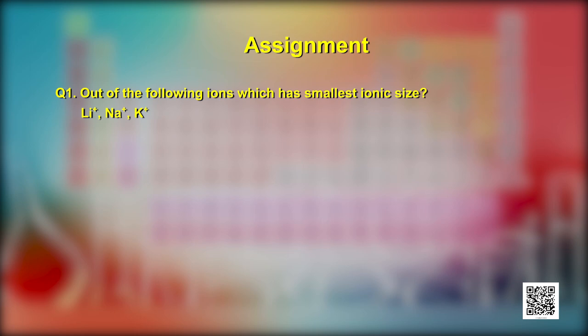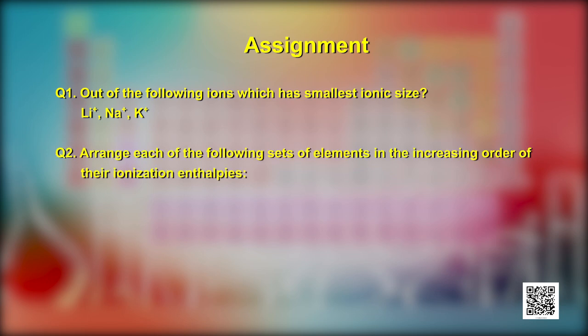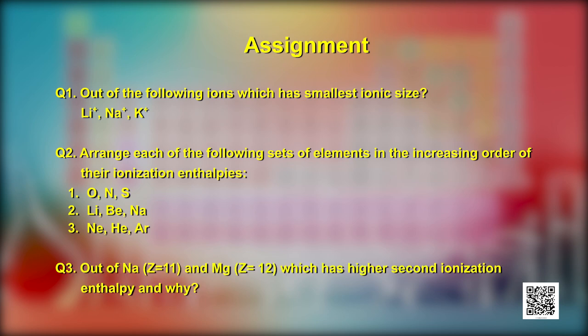Here are a few questions for you to practice. Question 1: Out of lithium ions, sodium ions, or potassium ions, which has the smallest ionic size? Question 2: Arrange each of the following sets in increasing order of ionization enthalpies — (i) oxygen, nitrogen, sulfur; (ii) lithium, beryllium, sodium; (iii) neon, helium, argon. Question 3: Out of sodium (atomic number 11) and magnesium (atomic number 12), which has higher second ionization enthalpy and why? Can you relate atomic radii and ionization enthalpy with chemical reactivity? I am leaving you with this food for thought. Have a nice day. Thank you.